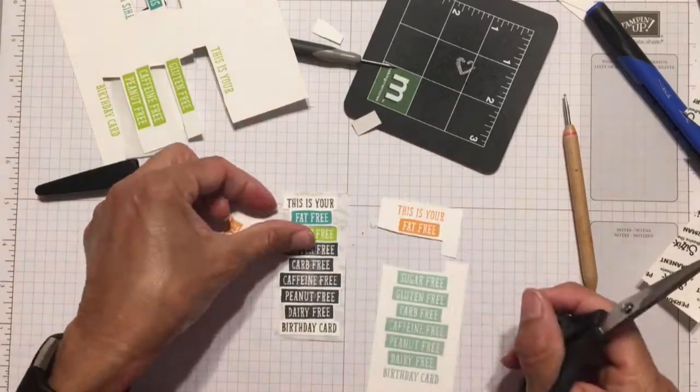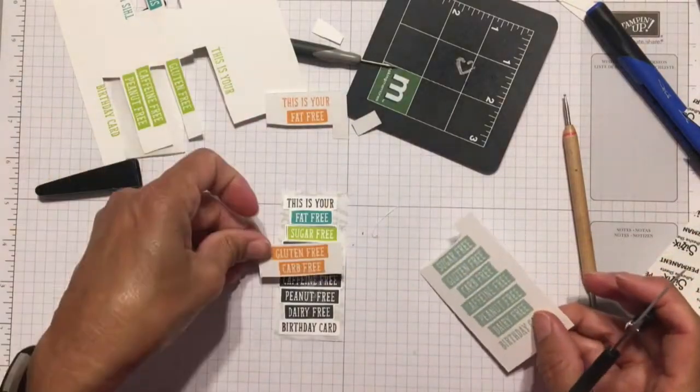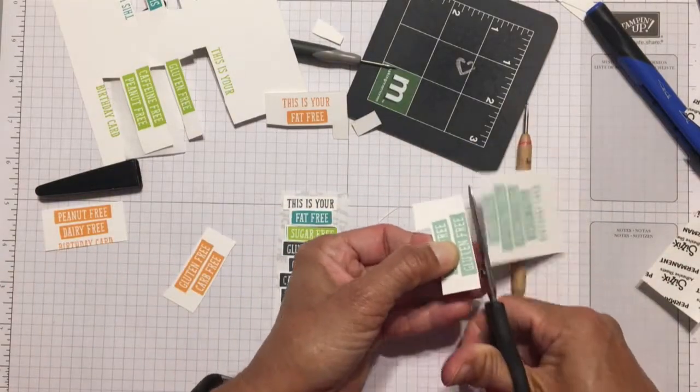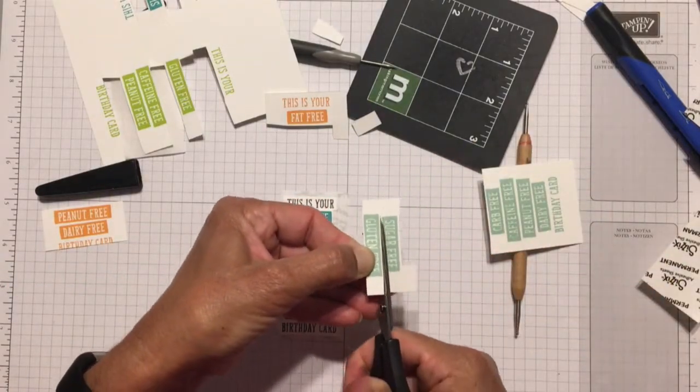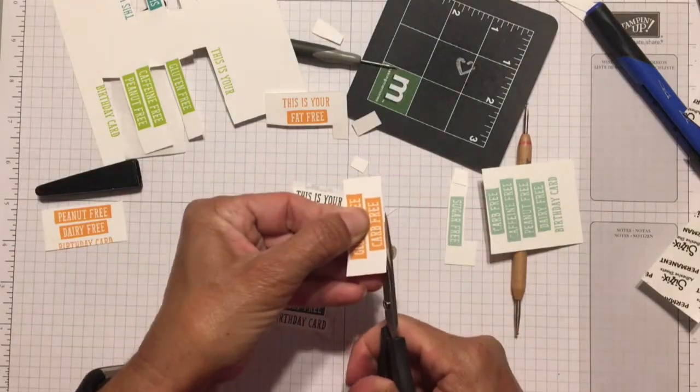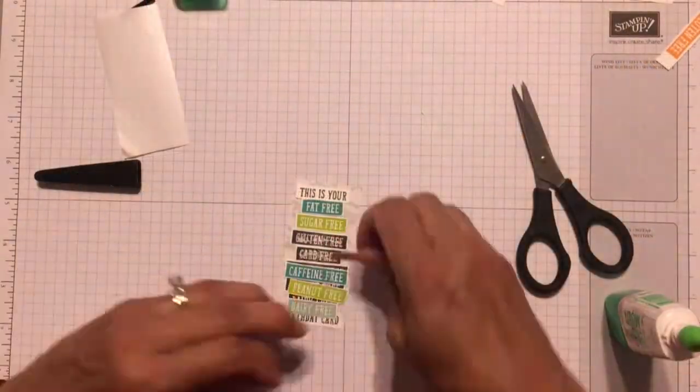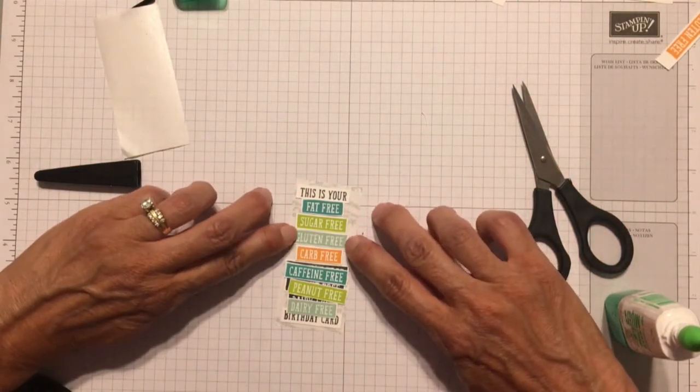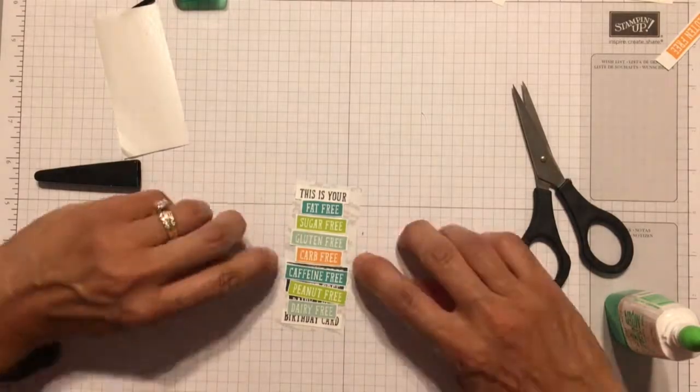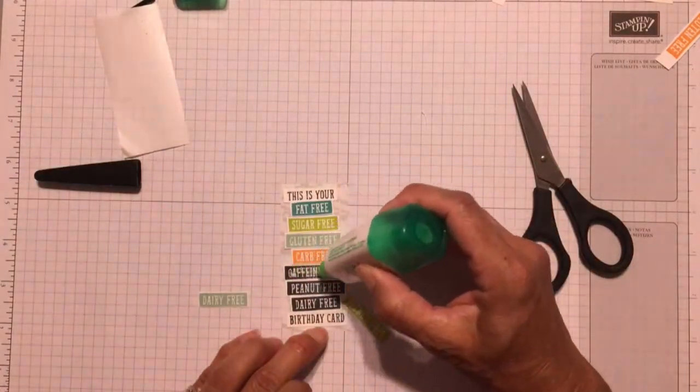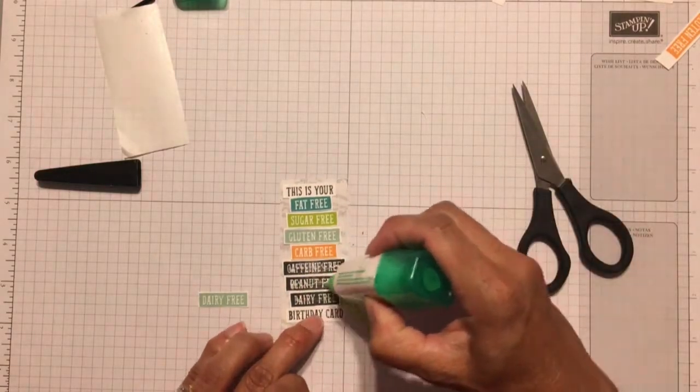To finish off the sentiment part of the card, all I have to do now is take all my colored stamped sentiments and trim out one, two words out of each one. And then just adhere them to the base sentiment, the black one, with some multipurpose glue. The colors I used for the sentiment were Pool Party, Bermuda Bay, Lemon Lime Twist, and Peekaboo Peach.